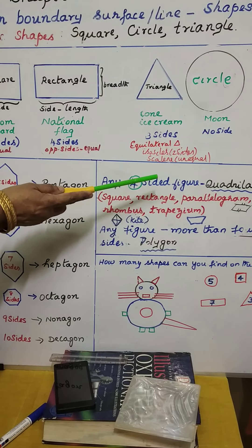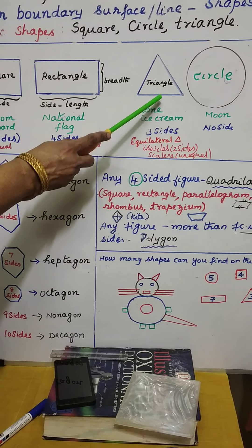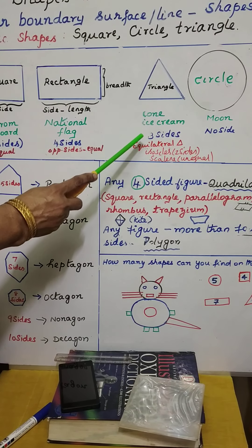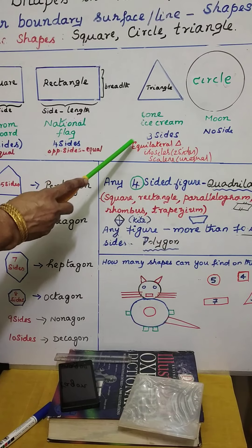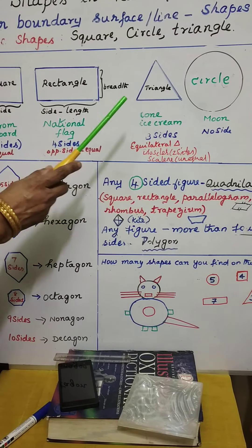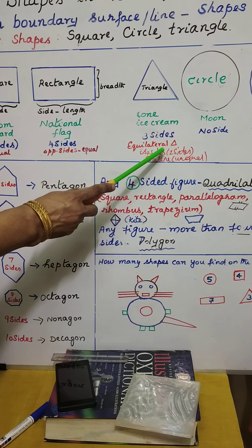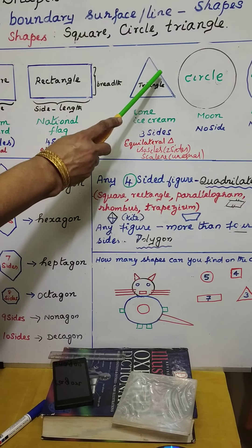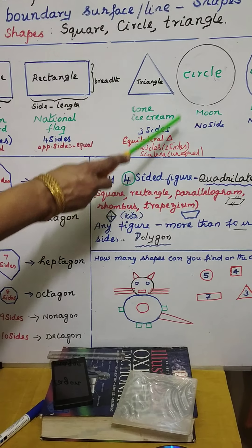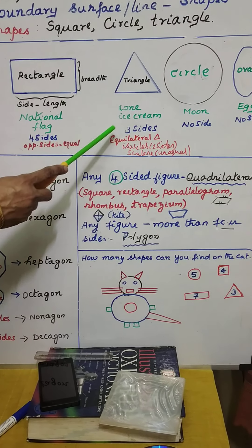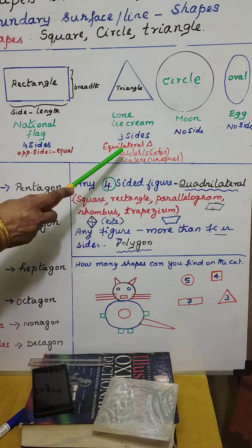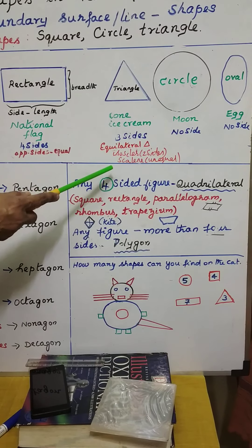In a triangle, there are three types. If all three sides are equal in measurement, it is said to be an equilateral triangle. Out of the three sides, if two sides alone are equal, it is said to be an isosceles triangle. If all sides are unequal — each has a different measurement — we call it a scalene triangle.